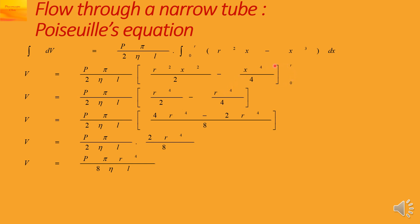Substituting the upper limit x equals R: we get R to the 4 upon 2 minus R to the 4 upon 4. Cross-multiplying gives 4 R to the 4 minus 2 R to the 4 divided by 8, which simplifies to 2 R to the 4 upon 8. The factor of 2 cancels, giving the final result V equal to P pi R to the 4 upon 8 eta L.